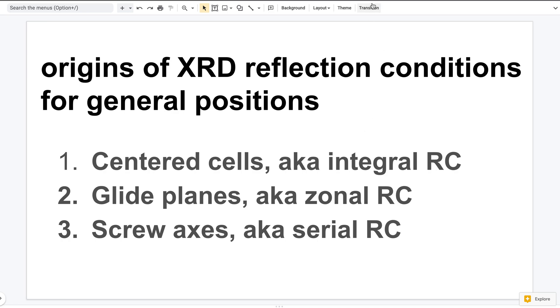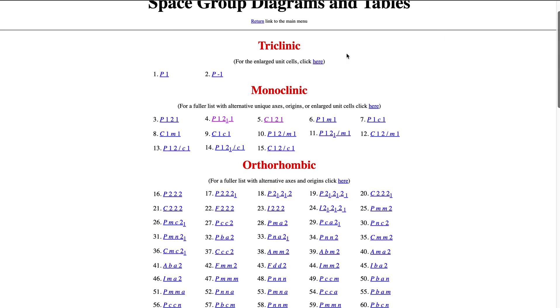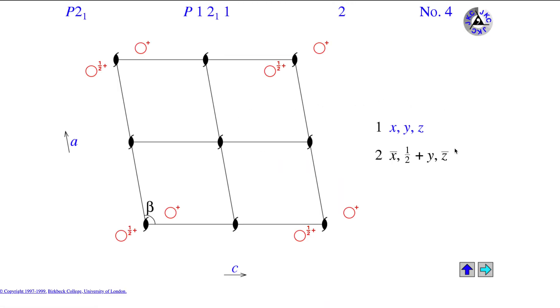The first example I will give is about screw. Let's consider the space group with a single screw axis, P2₁. If you have screw symmetry, as long as you have one atom located at (x, y, z), you will have another atom located at (-x, ½+y, -z). Those are all in fractional coordinates.